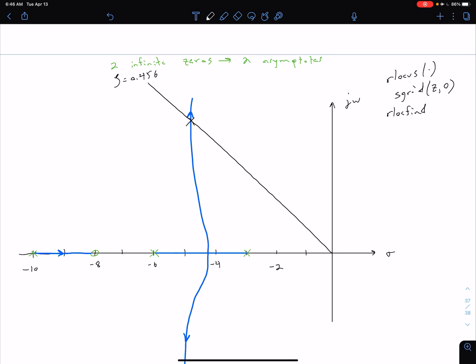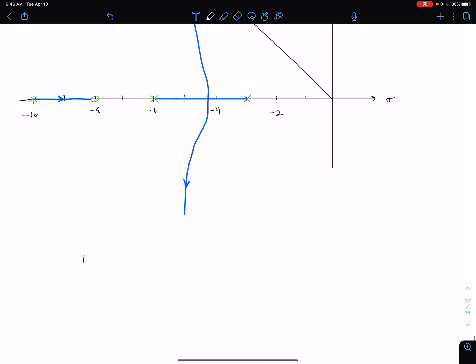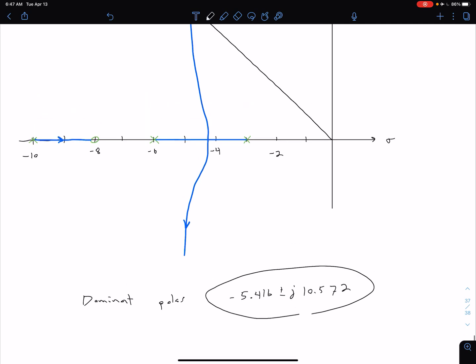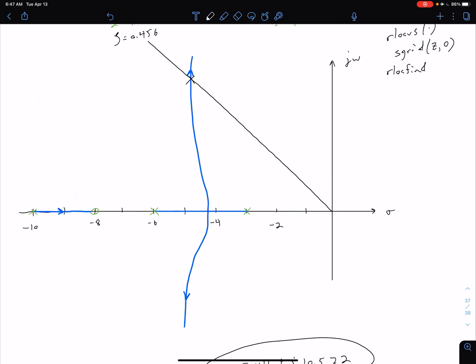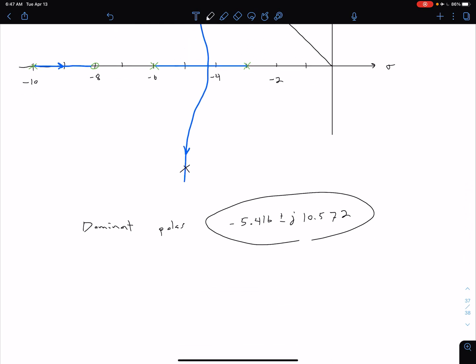Okay. So if we go through this process though, using MATLAB to find the exact position of that pole, we find that our dominant poles are going to be at negative, let's see, make sure I do the right values here, negative 5.416 plus or minus J 10.572. So those are going to be our two dominant poles. So of course, the one is up here. As I've indicated, we're going to have a complex conjugate down here. And it turns out, of course, we have a third pole, which is over here between our negative 10 and negative eight.